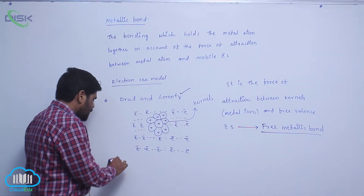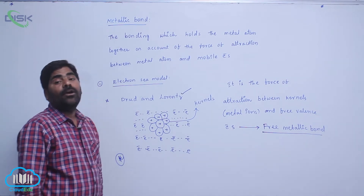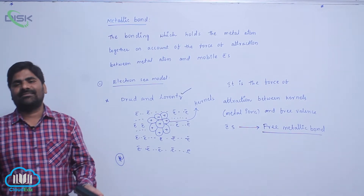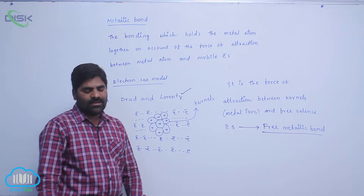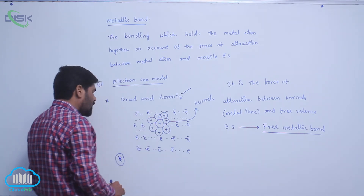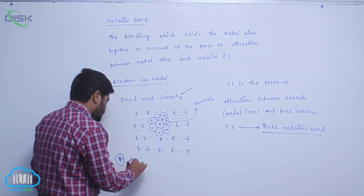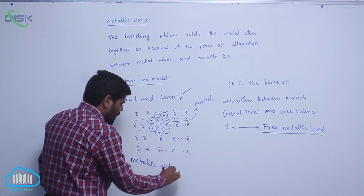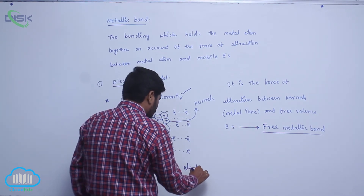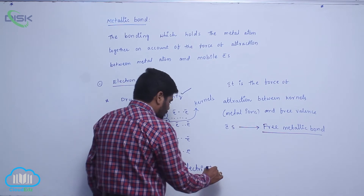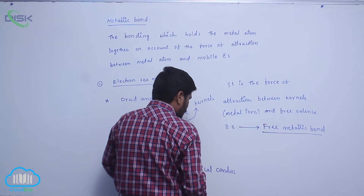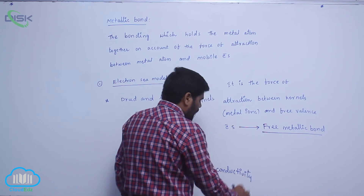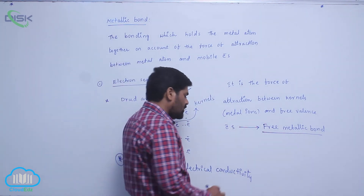Due to this particular reason, metals are good electrical conductors, because the flow of electrons increases conductivity. Based on this, we can explain metallic luster, electrical conductivity, and thermal conductivity.